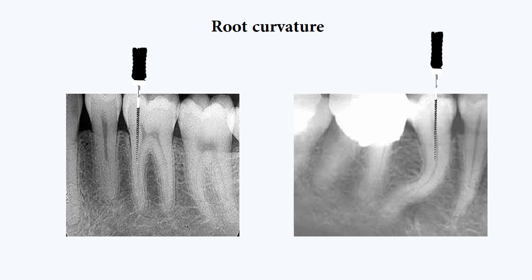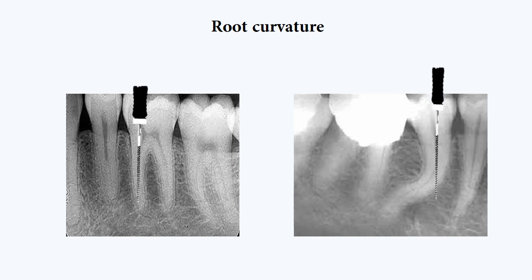Let's see two examples. There are two periapical X-rays. The first one shows molars with straight root canals. However, on the second X-ray you will find a premolar with double curvature. So if you start to negotiate this canal without making an X-ray, you will of course make a perforation.